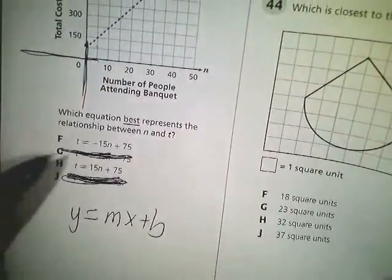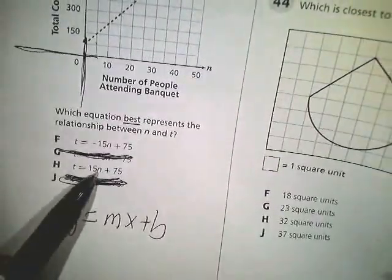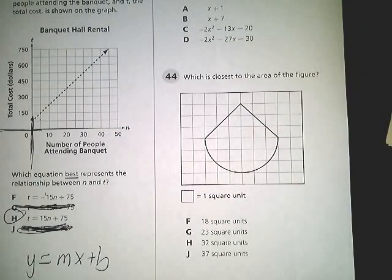And this question is ridiculously easy once you look at it for a second. It's going up, right? So it's going up, so it has to be H. If it was going down, number one, that would say that the banquet is cheaper the more people that you have there.